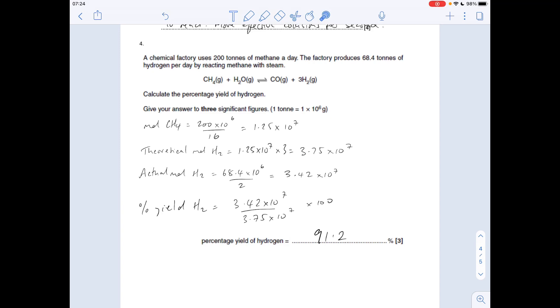Then we're going to take that actual tonnage of hydrogen to work out how many moles of hydrogen would typically be produced: mass over MR. The percentage yield is the actual yield over the theoretical yield times 100. 91.2.